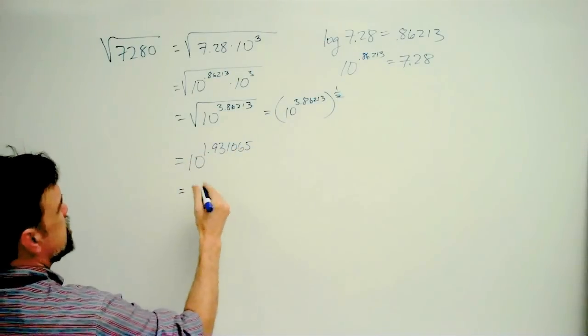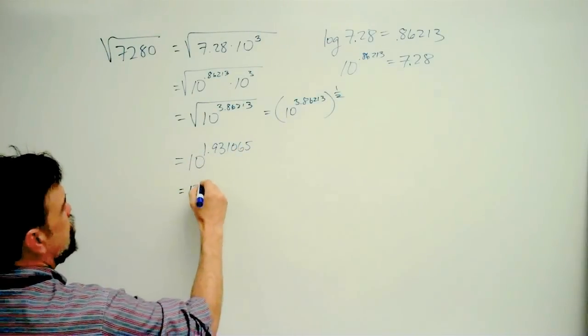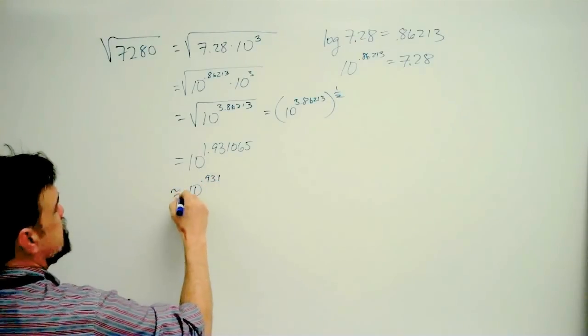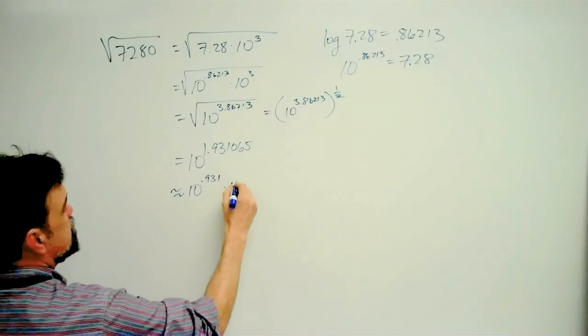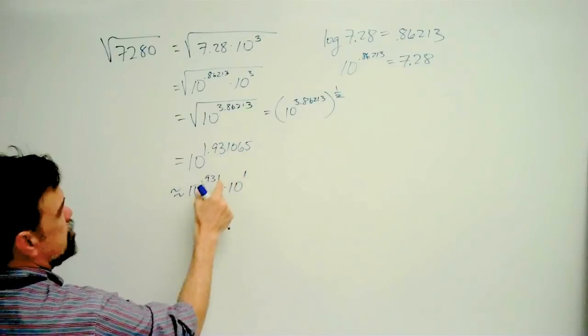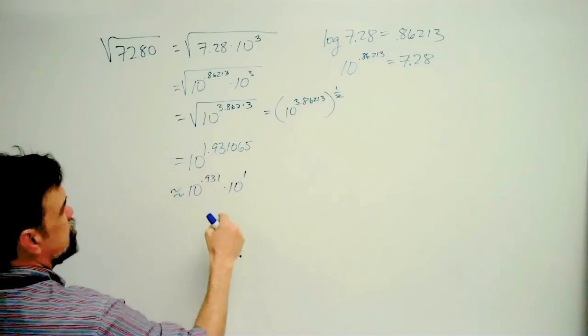And so I say, okay, so this is, I'm going to split this up. This is 10 to the 0.93, it's approximately 10 to the 0.931 times 10 to the 1. I took the fractional portion of this and the integer portion of this.